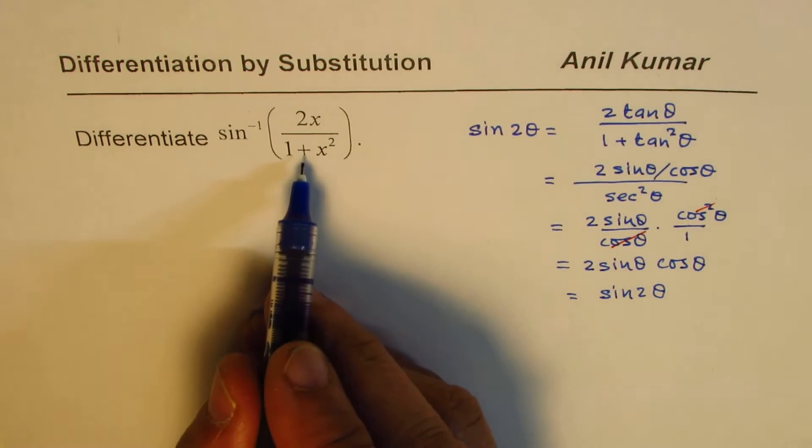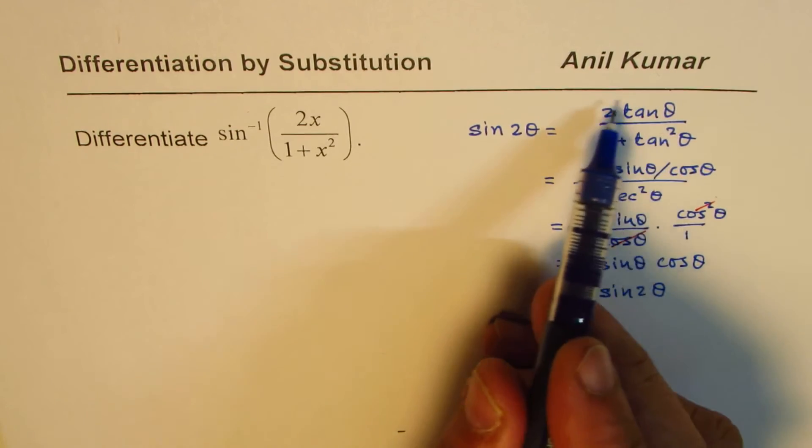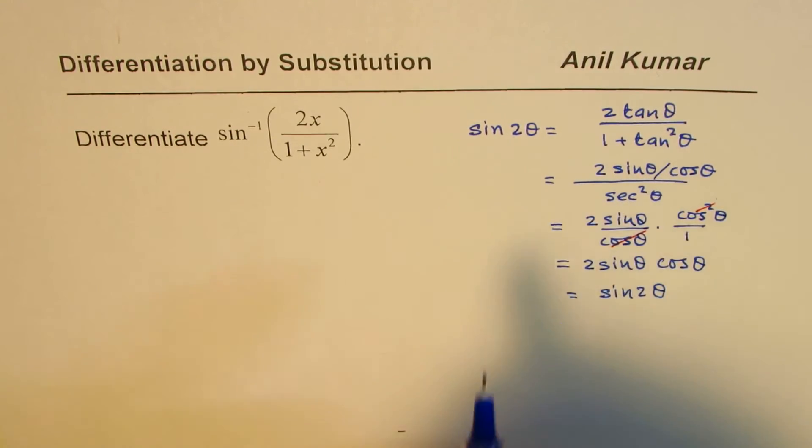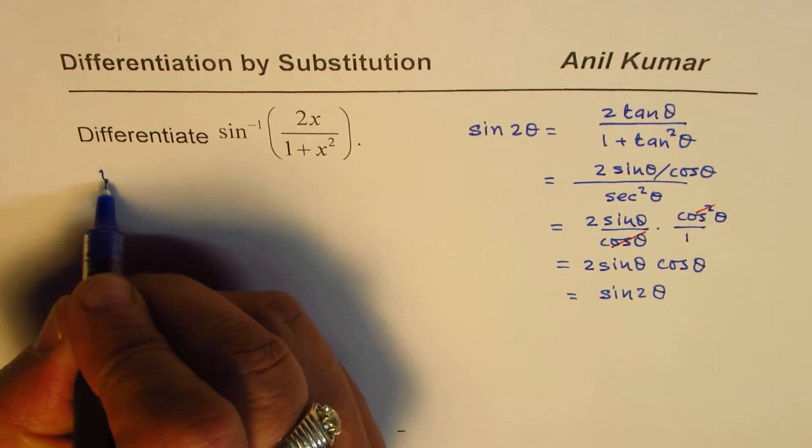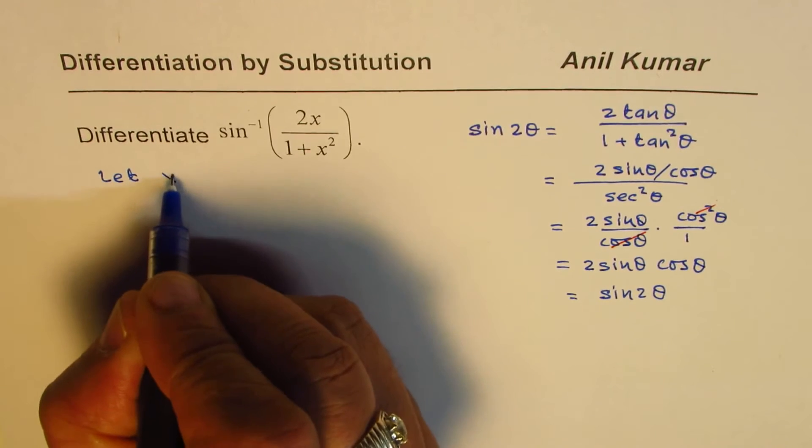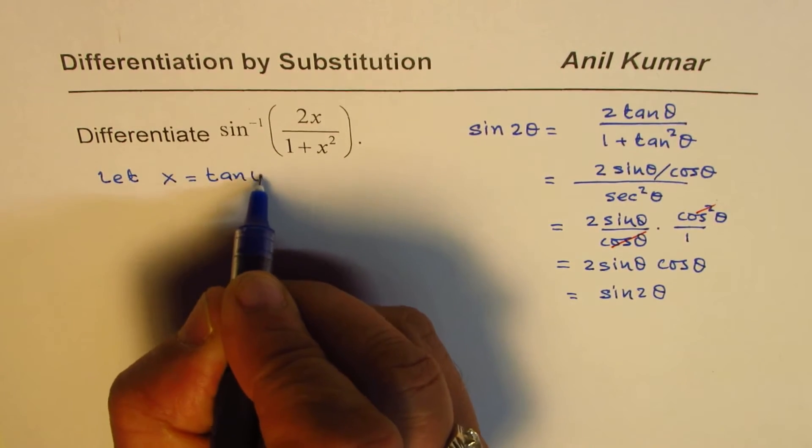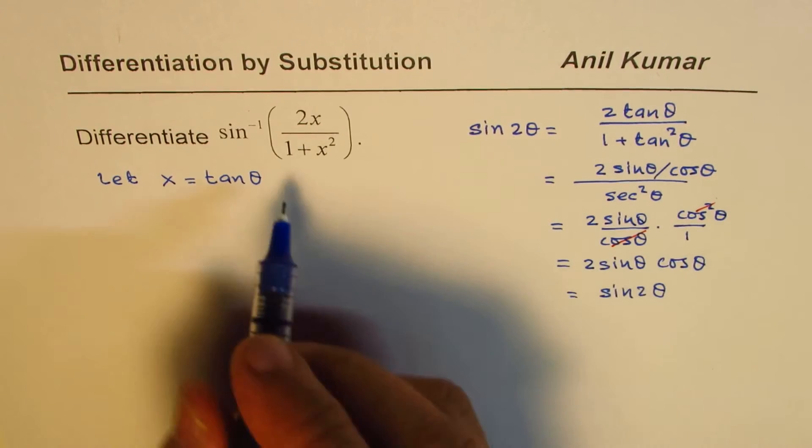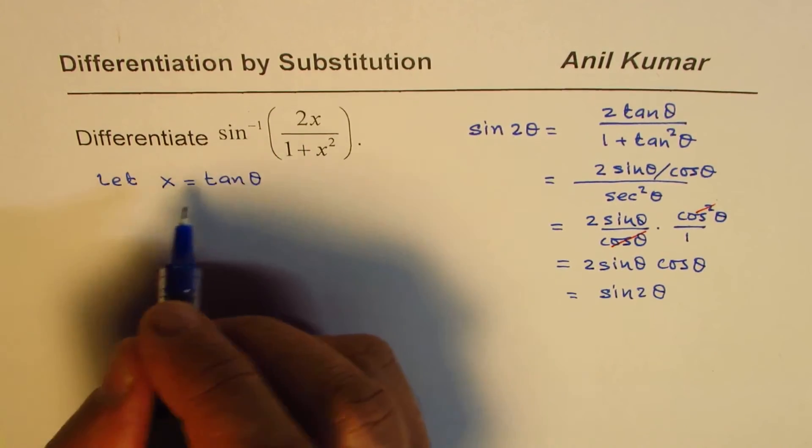That helps us to simplify this. We are looking for this kind of an expression, and to get this, let us substitute x equals tan theta. So x is being substituted as tan theta. Then what do we get?